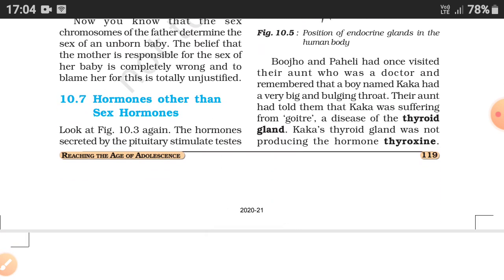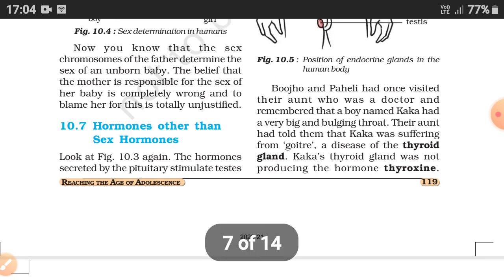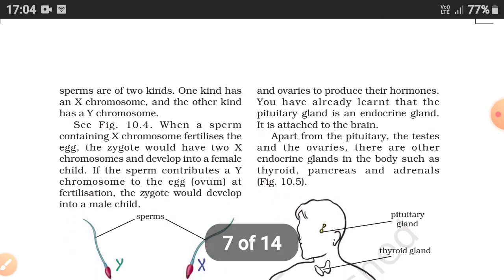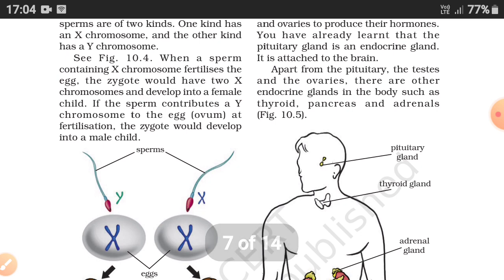Today's topic is hormones other than sex hormones. Looking at figure 10.3, the hormones secreted by the pituitary gland stimulate the testes and ovaries to produce their respective hormones. The pituitary gland is an endocrine gland attached to the brain, and it is known as the master gland.